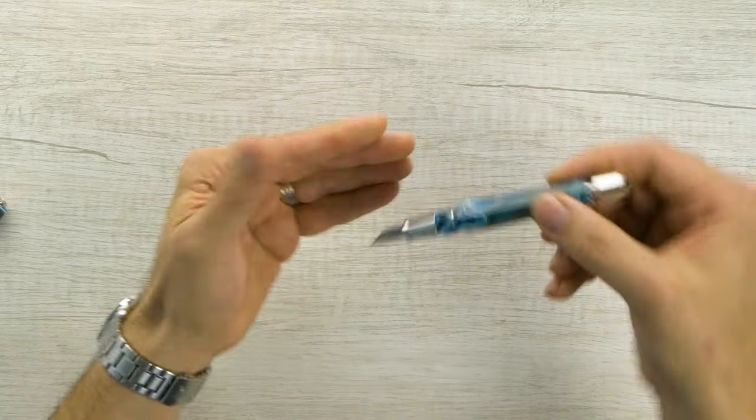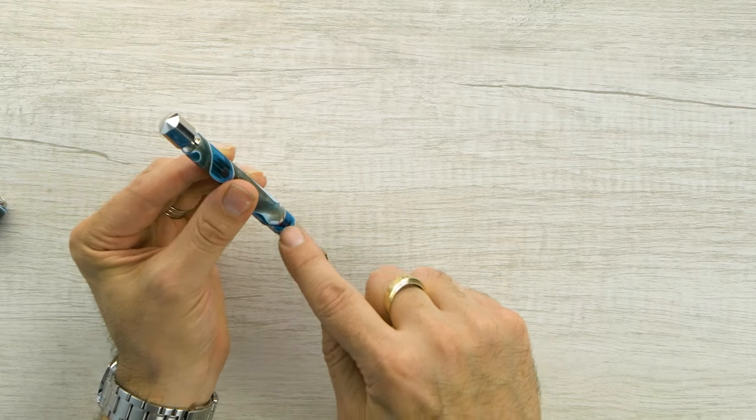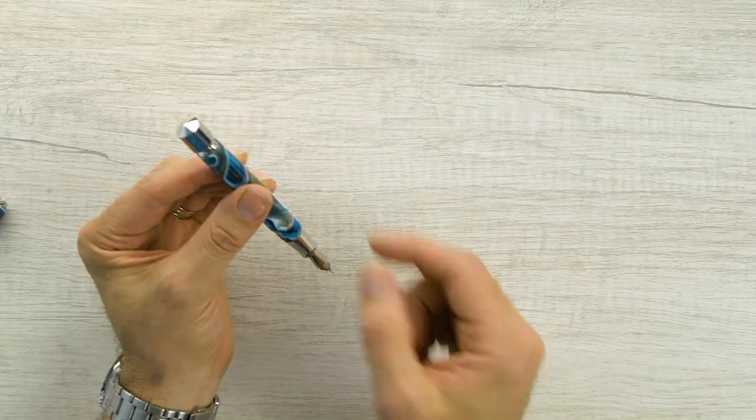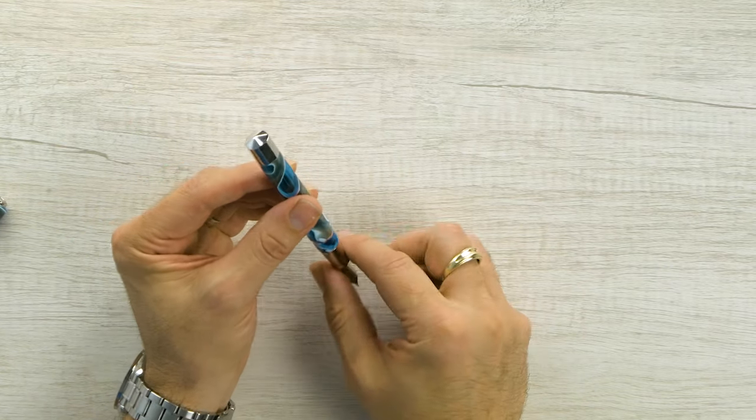you simply hold it kind of upside down. And then unscrew it. And then you'll watch as the ink fills up. And then keeping it down, you're just going to screw it down. And that will keep the ink in there.